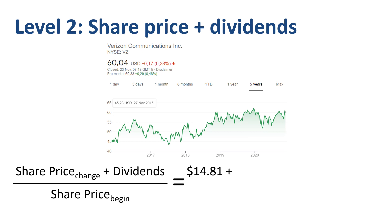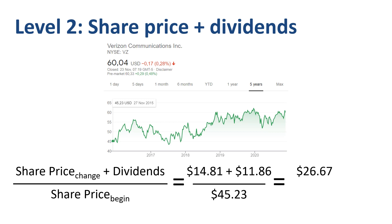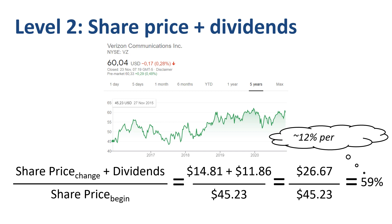$14.81 plus $11.86 divided by $45.23. This is $26.67 divided by $45.23, or 59% total gain in 5 years. Dividing this total return by 5, this equates to around 12% per year — a much more complete picture of stock returns versus just focusing on the annual 6.5% share price gain.